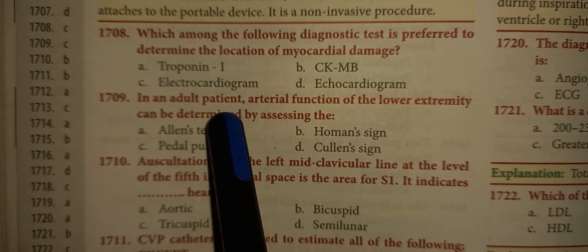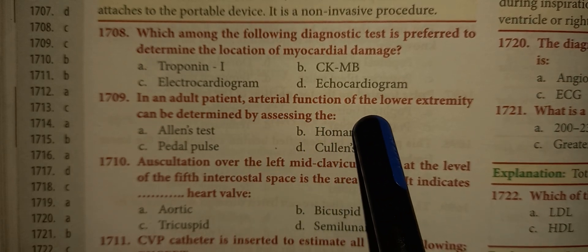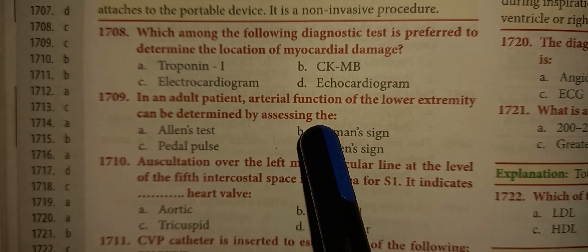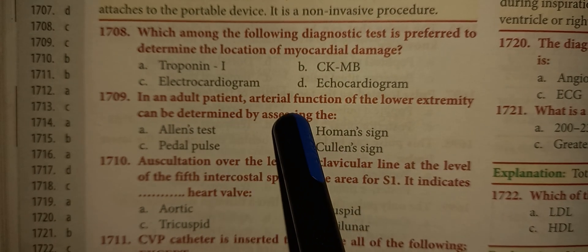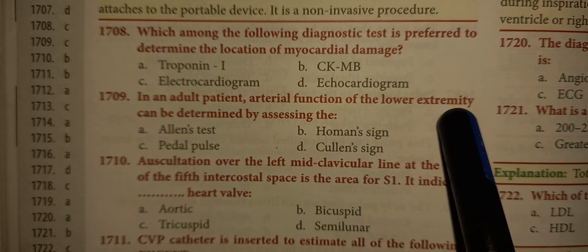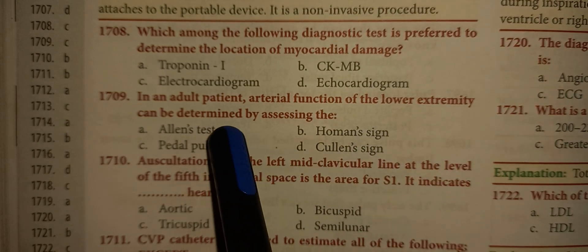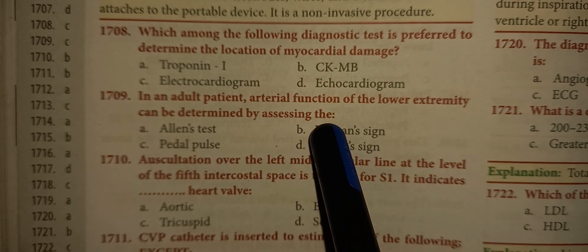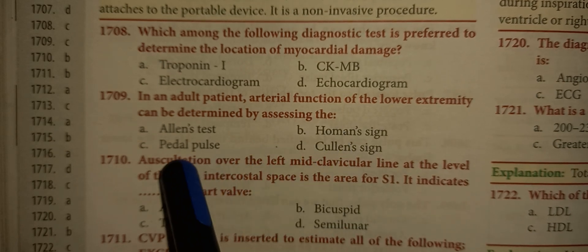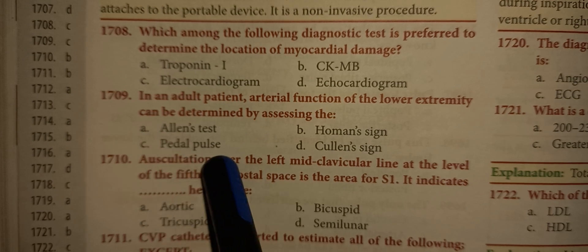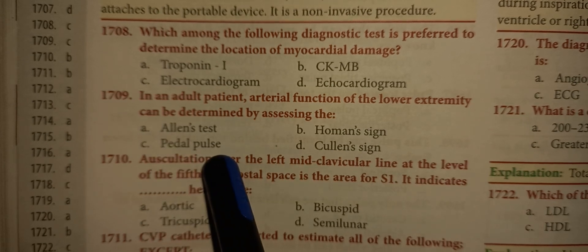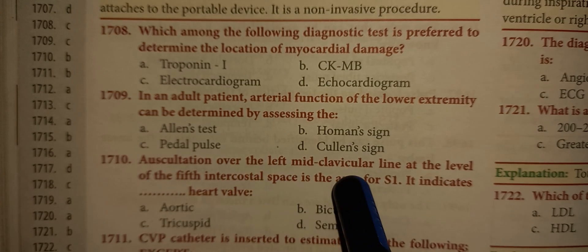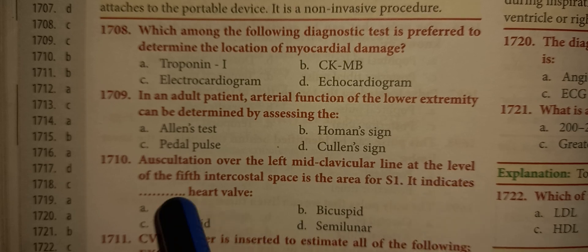In an adult patient, arterial function of the lower extremity can be determined by assessing the — Answer: C. Pedal pulse. Next: Auscultation over the left mid-clavicular line at the level of the fifth intercostal space.